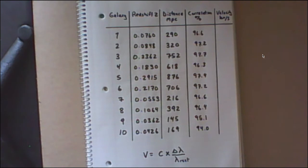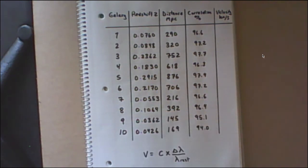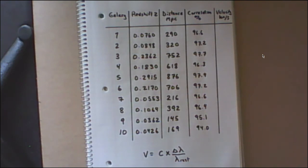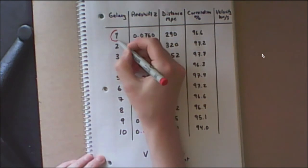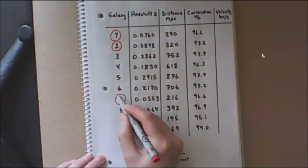Now to get a good graph, you only need to graph about six to eight data points, and you've got ten of them here. So this is actually a few too many. So to make your life easier, I'm just going to have you graph six of these data points. Specifically, this one, this one, and these four.